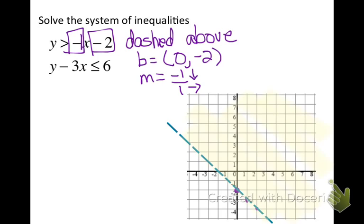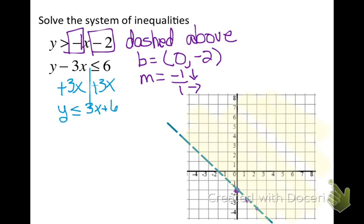Now I do the same thing with my second inequality, except I have to solve for y first — putting it in slope-intercept form. I add 3x to both sides, which gives me y is less than or equal to 3x plus 6. Since it has the underline — less than or equal to — I'm going to use a solid line. And since it is pointing towards the y, I am going to shade below the y-intercept. My y-intercept is (0, 6).